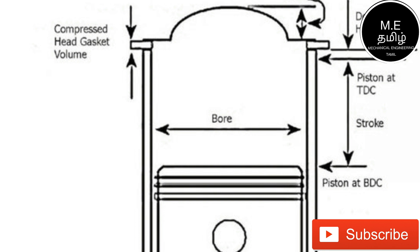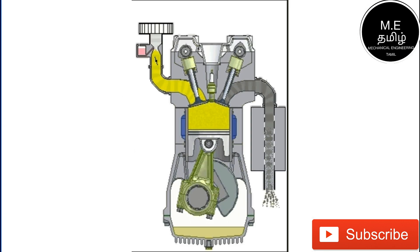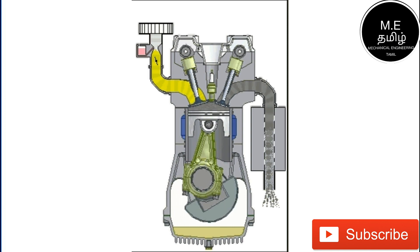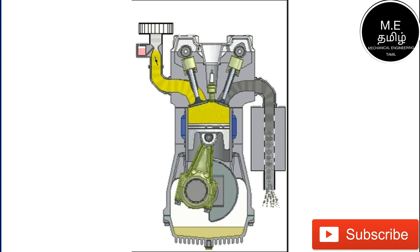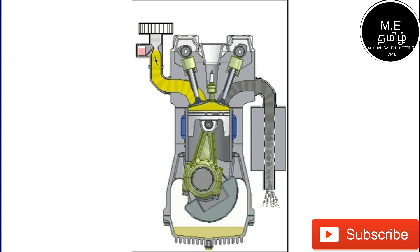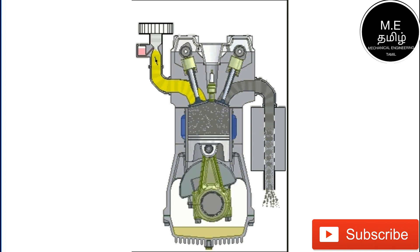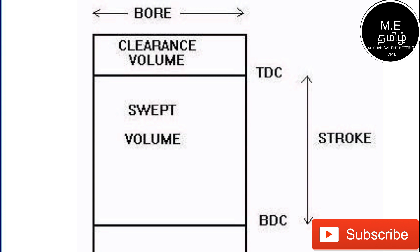We put the piston inside the cylinder of the engine. The key points here are TDC and BDC. TDC is the Top Dead Center, and BDC is the Bottom Dead Center. The CC of an engine is defined by the movement between TDC and BDC.